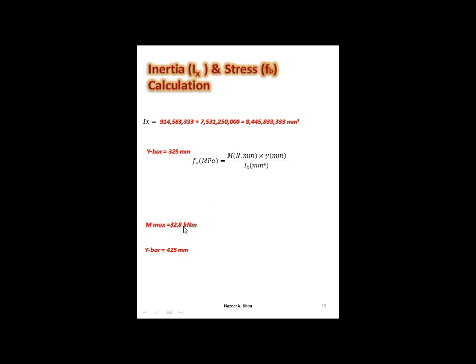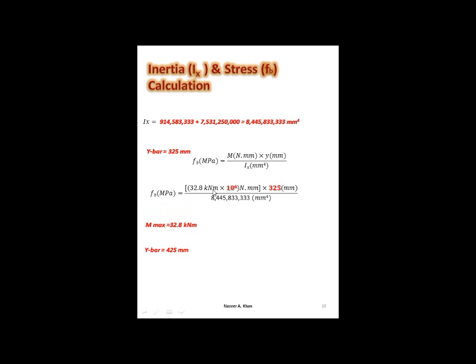We have to change kilonewton·meter to newton·millimeter. To change kilonewtons to newtons, multiply by 1,000; meters to millimeters, multiply by another 1,000. So 32.8 kilonewton·meter times 10⁶ gives newton·millimeter. Multiplying that by millimeters gives newton·mm² in the numerator and mm⁴ in the denominator. The mm² cancels, leaving newton/mm², which is MPa.